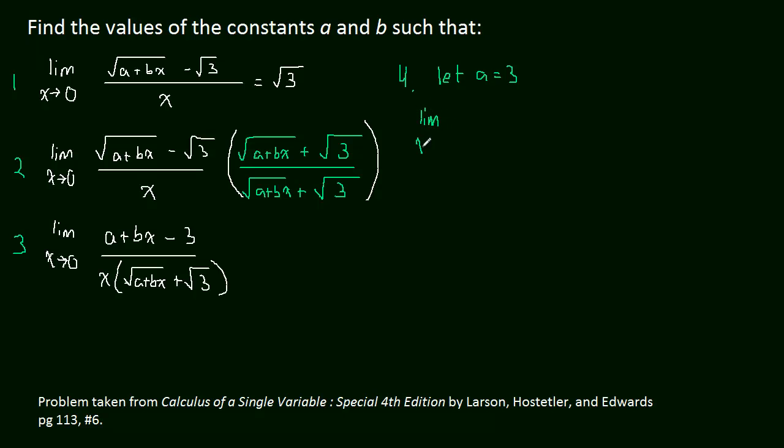We're going to end up with the limit as X approaches 0 of 3. I already told you those will add out. So this will be BX divided by X times the square root of 3 plus BX plus radical 3. Okay, so that's a little bit messy. I'm going to try and clean that up in the next time I write it.